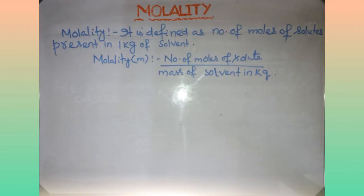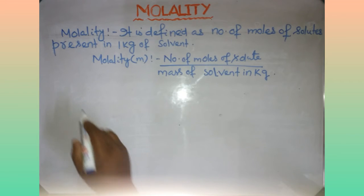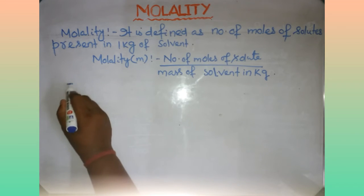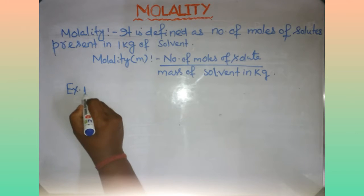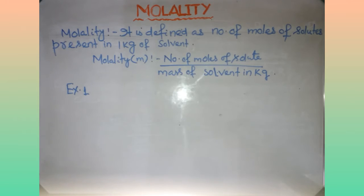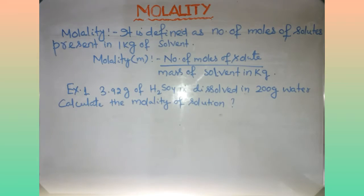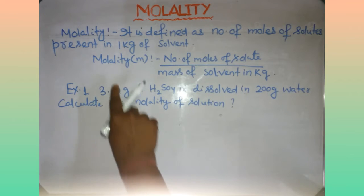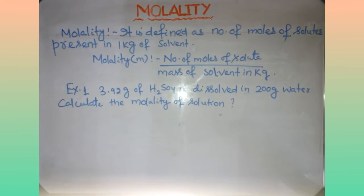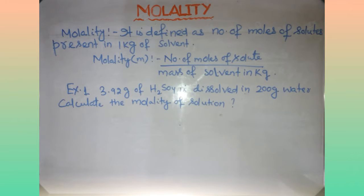It will be more clear with some examples. Example 1: 3.92 grams of H₂SO₄ is dissolved in 200 grams of water. Calculate the molality of the solution. Molality is equal to the number of moles of solute upon the mass of the solvent in kg.